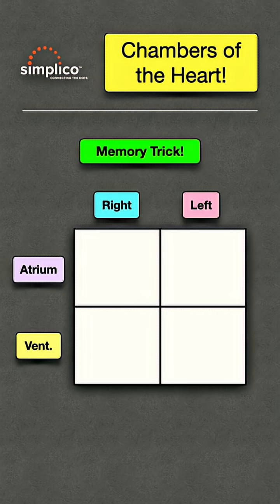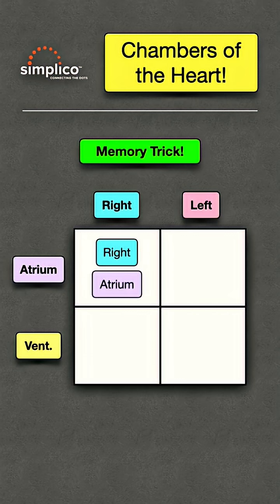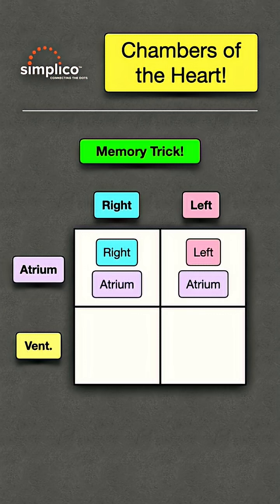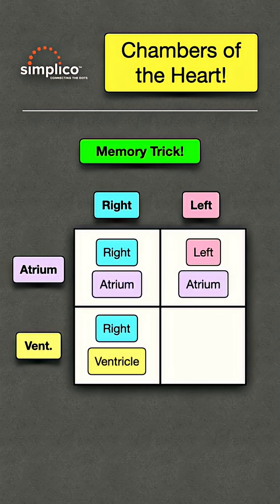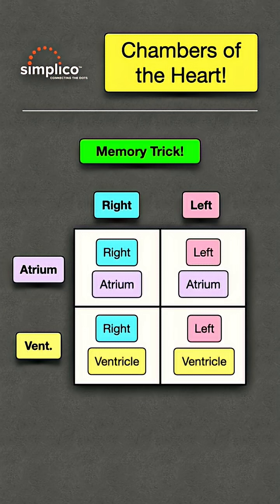If you bring it all together, you have the right atrium in the upper right, left atrium in the upper left, right ventricle in the lower right, and left ventricle in the lower left.